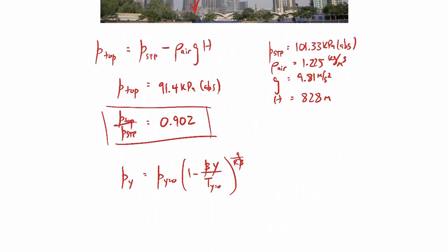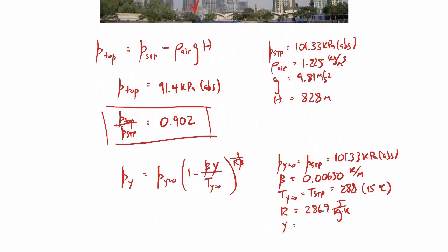So again, let's put in some numbers here. P at y equals 0 is just our pressure at standard temperature pressure, which we had up above. The lapse rate or beta is 0.00650 Kelvin per meter. And the temperature at y equals 0, this is just the temperature at standard temperature and pressure, is 288 Kelvin or 15 degrees C. Now that may not be such a good assumption out in Middle East where the Burj Khalifa is, but we'll just use the standard temperature and pressure for this. And then the gas constant for air is 286.9 joules per kilogram Kelvin. And again, y here will just be our height h.